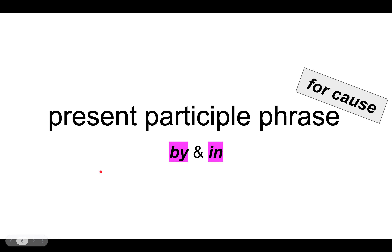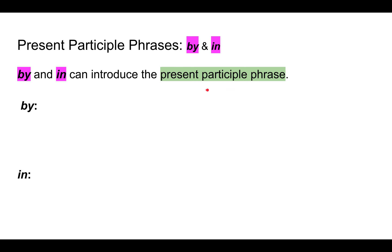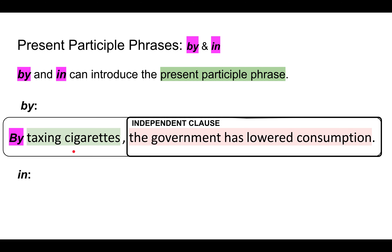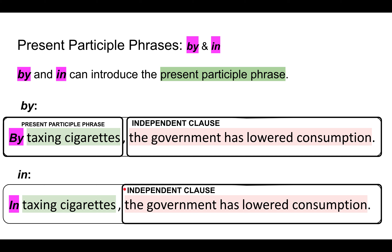Now I want to talk about by and in. By and in can introduce the present participle phrase. For example: by taxing cigarettes, the government has lowered consumption. Here, the government has lowered consumption is the independent clause, and by introduces the present participle phrase taxing cigarettes. It also makes that cause meaning stronger. We can also use in: in taxing cigarettes, the government has lowered consumption. Both by and in can be used to introduce the present participle phrase, and they strengthen that these present participle phrases are the causes of these independent clauses.